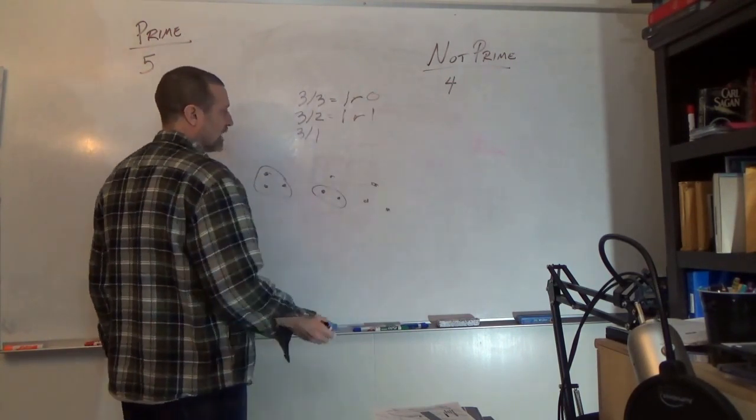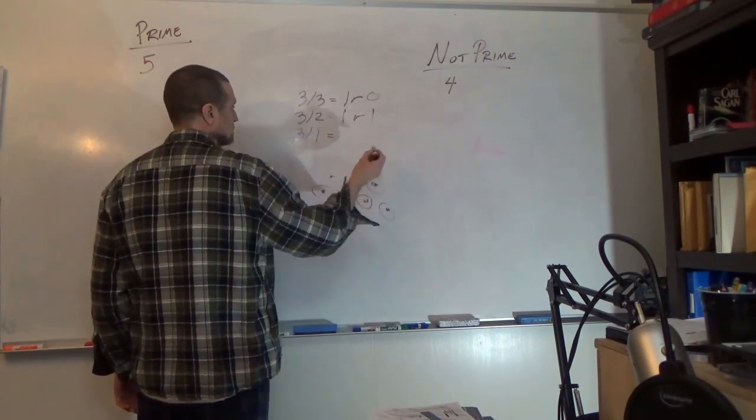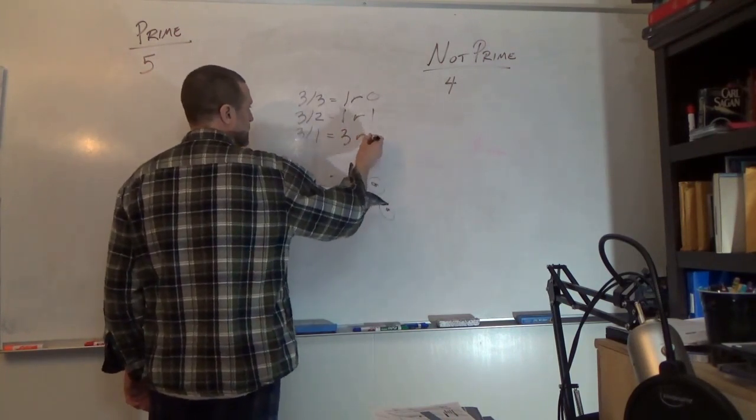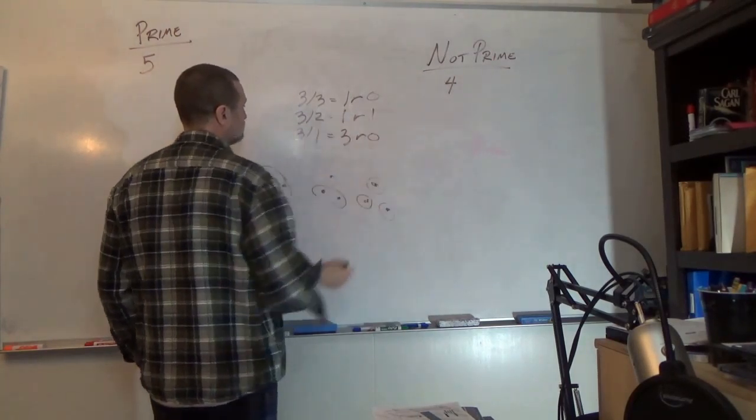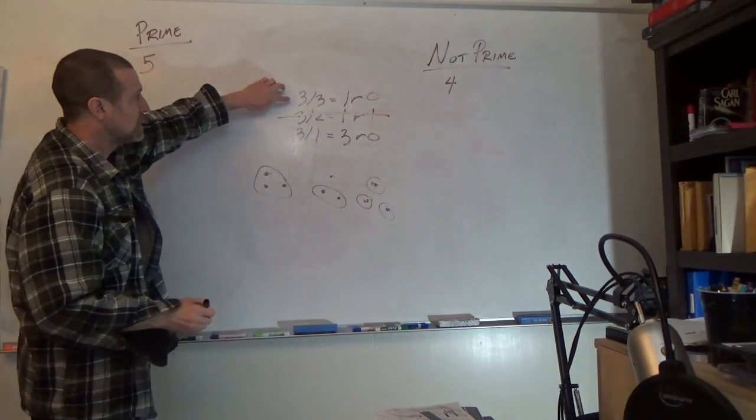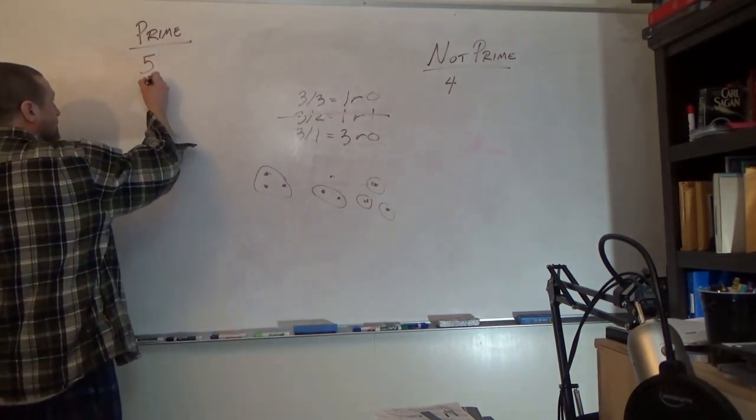And 3 divided by 1 is equal to 3 remainder 0. So 3 can be divided by itself and by 1. So 3 is prime.